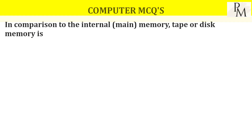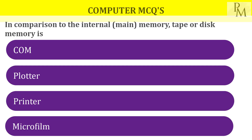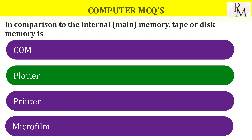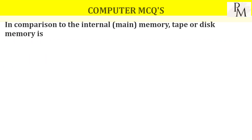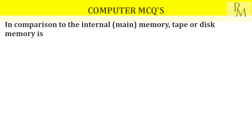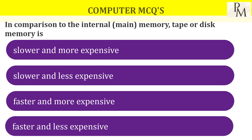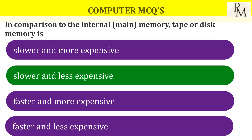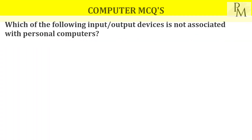In comparison to the internal main memory, tape or disk memory is? Options include slower, more expensive, and faster. The answer is slower and less expensive.